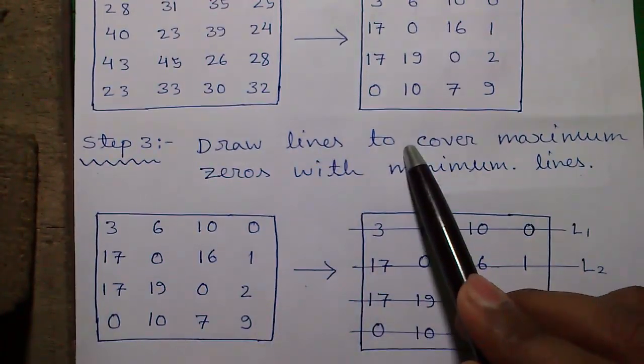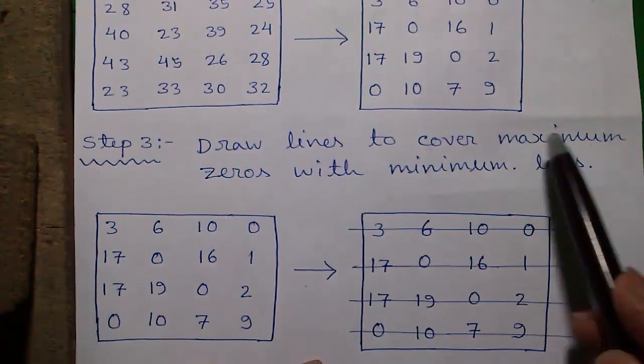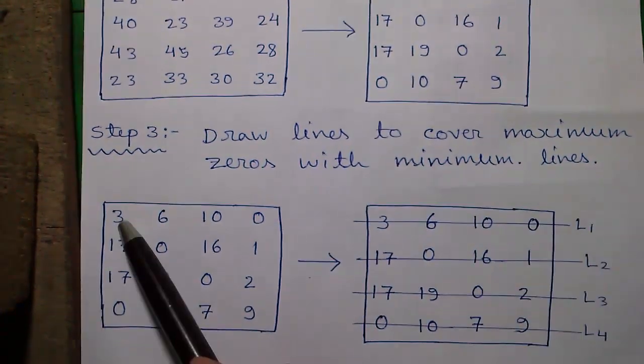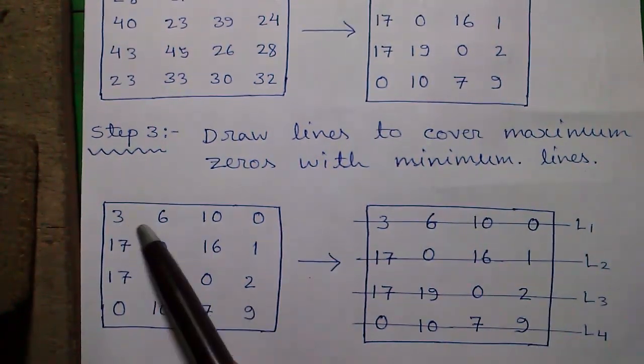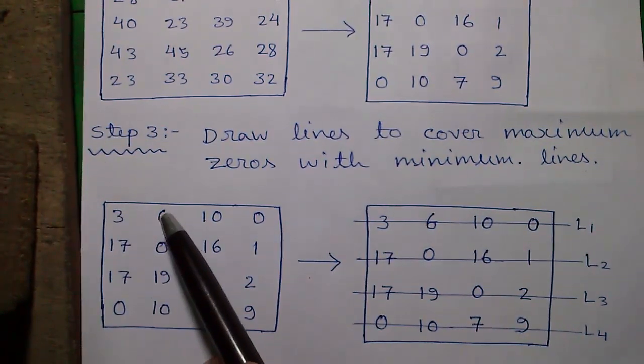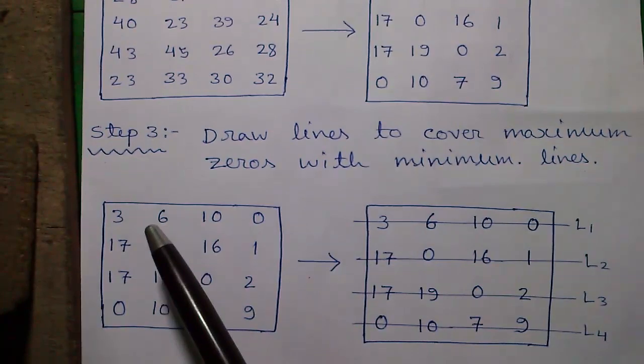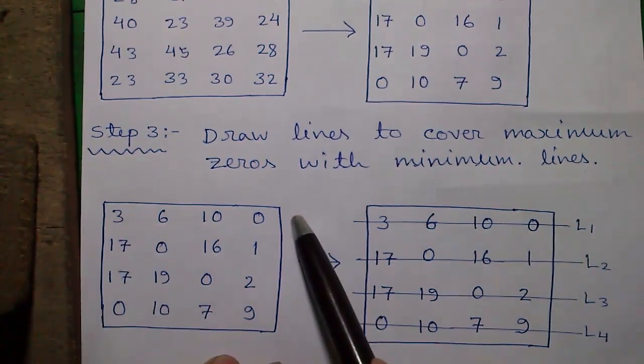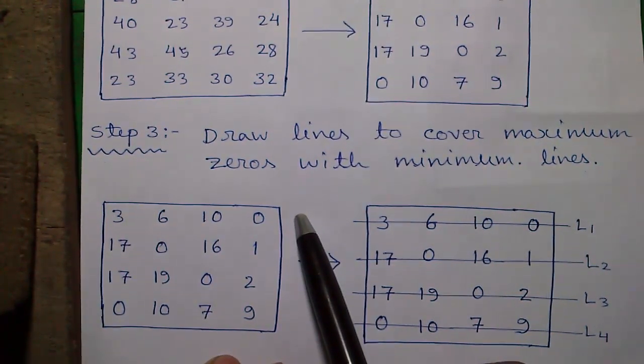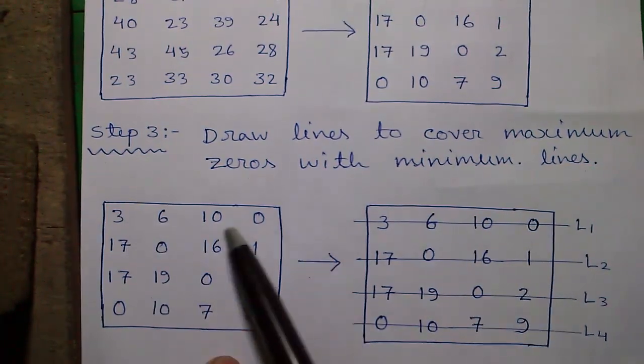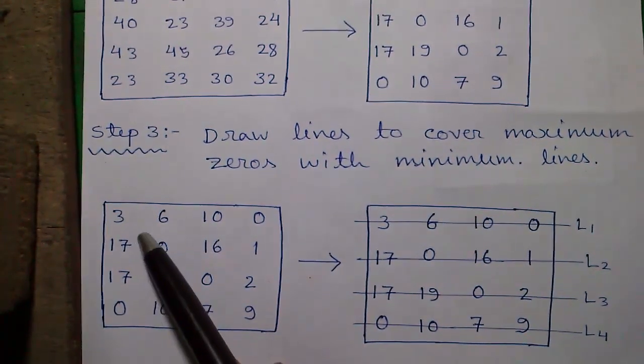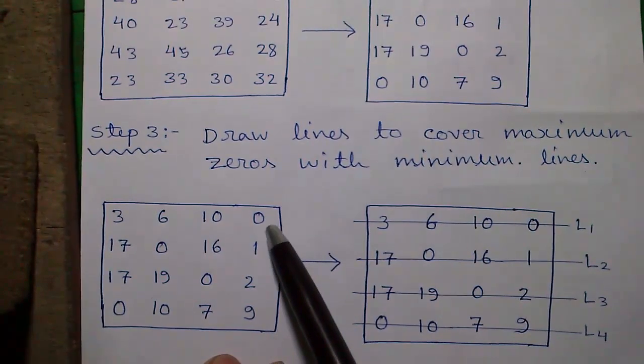Step 3: Draw lines to cover maximum 0s with minimum lines. So we will draw lines. In a 4 cross 4 matrix we will look for 4 zeros in a single row or single column and we will draw our first line in that row or that column. If not then we will look for 3 zeros in a line. If not we will look for 2 zeros in a line. If not we will look for 1 zero in a line.